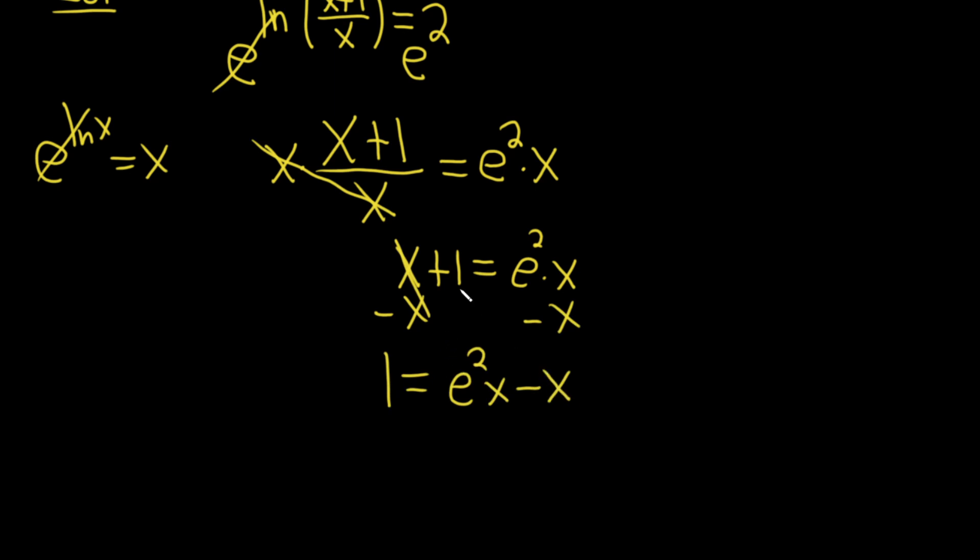Now that we have them all together on one side, we can factor out an x. So we can put it here like this and put a parenthesis. And it looks like we're missing an e squared because x times e squared is e squared x. And then minus 1, that's because x times minus 1 is minus x.